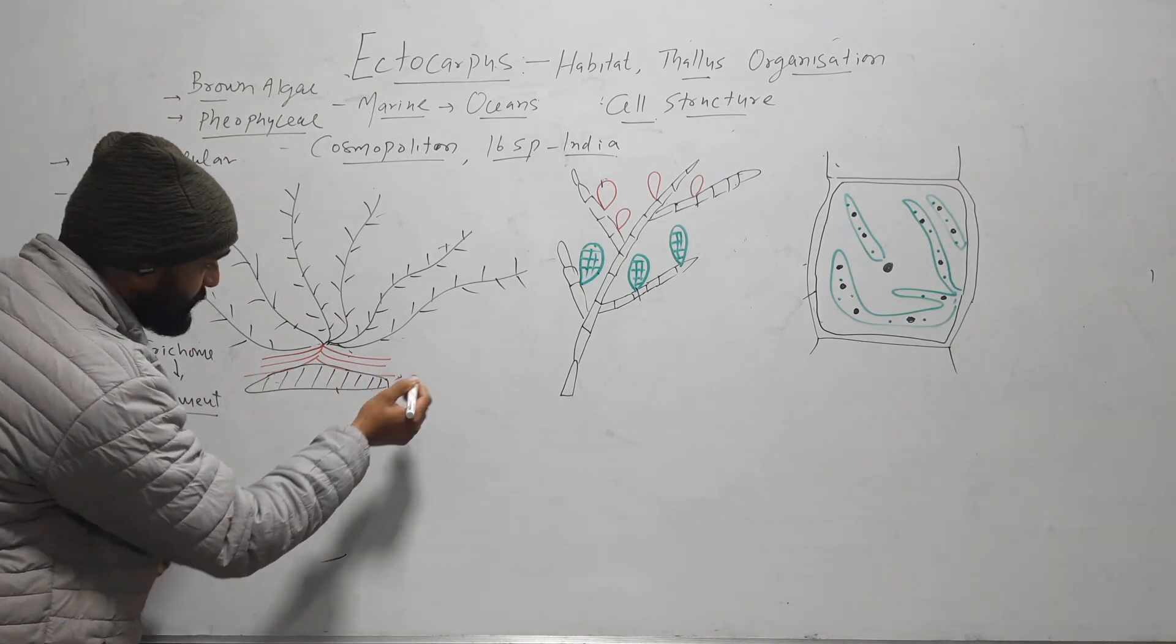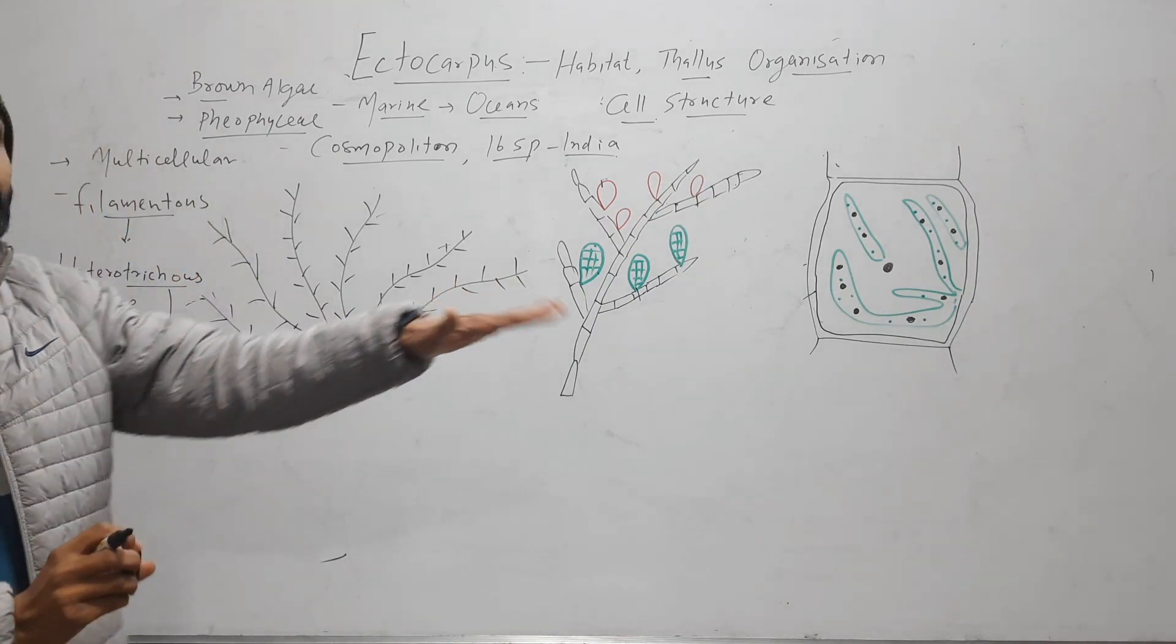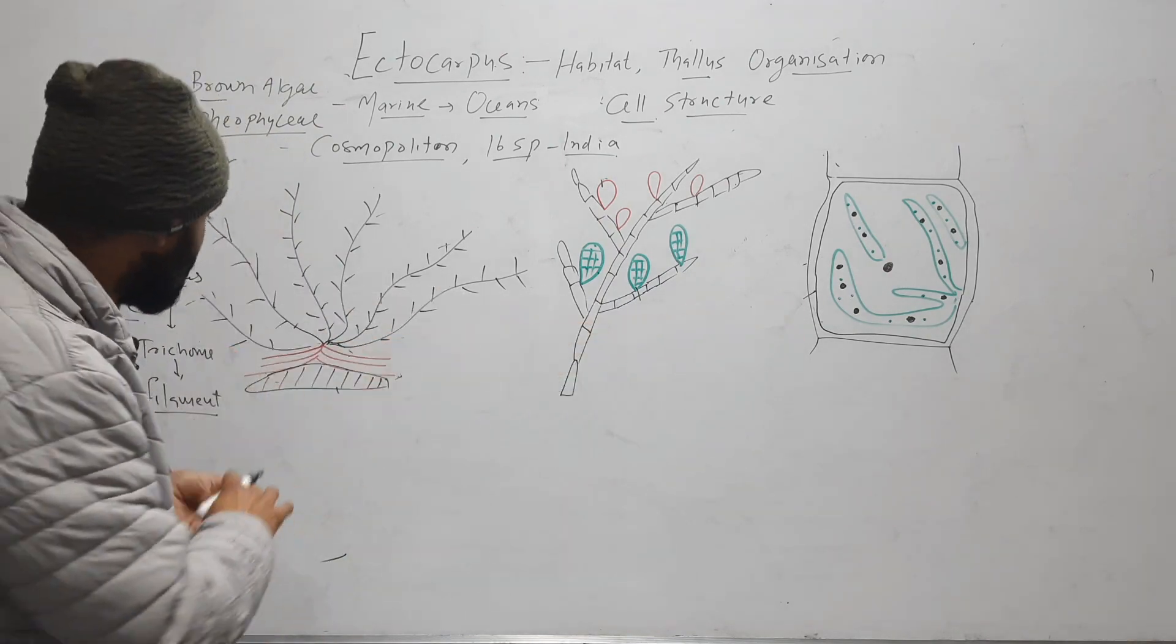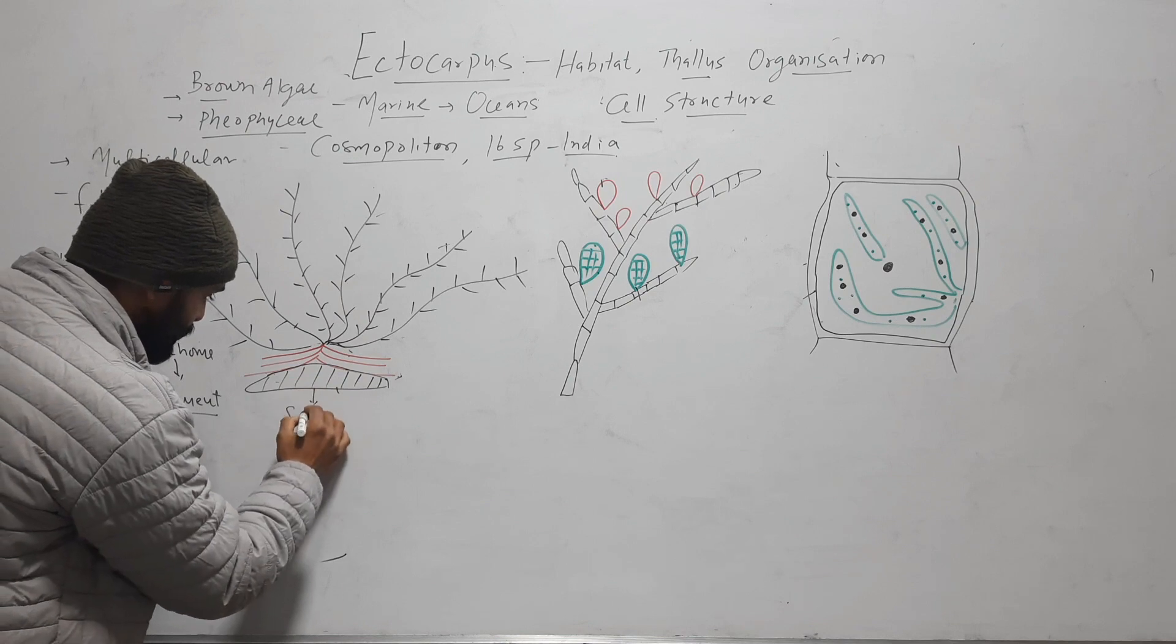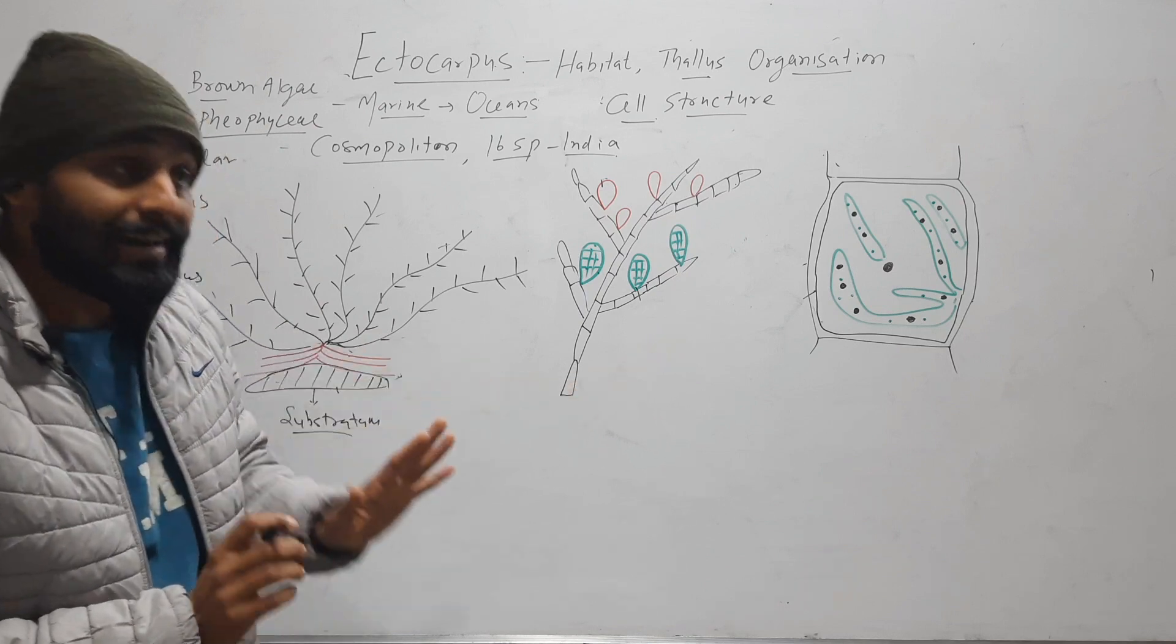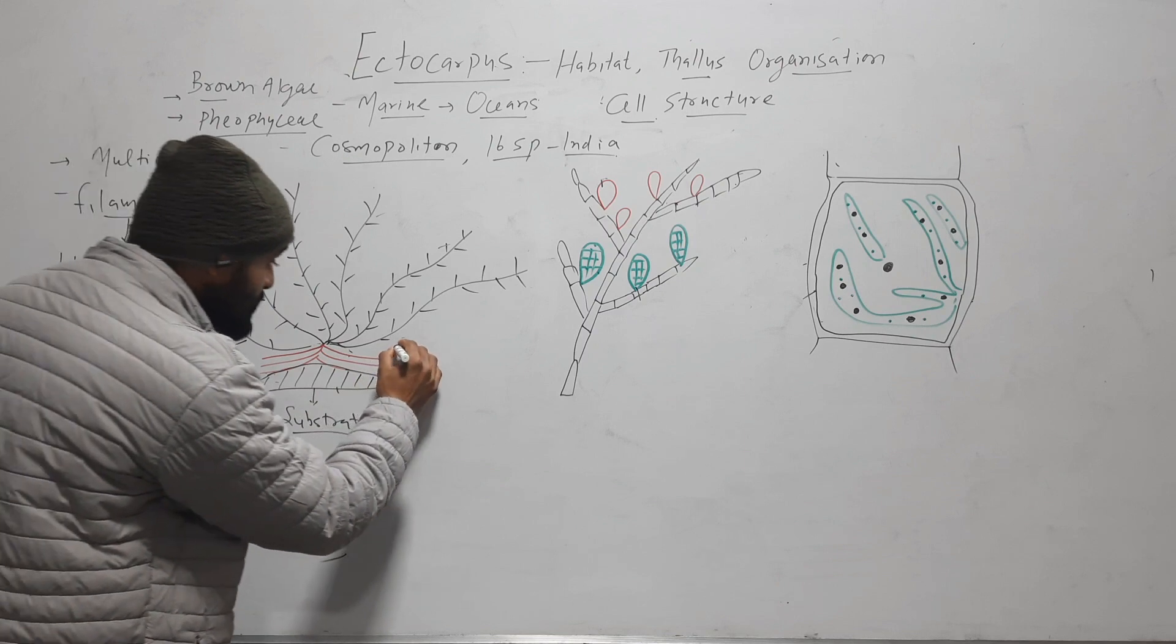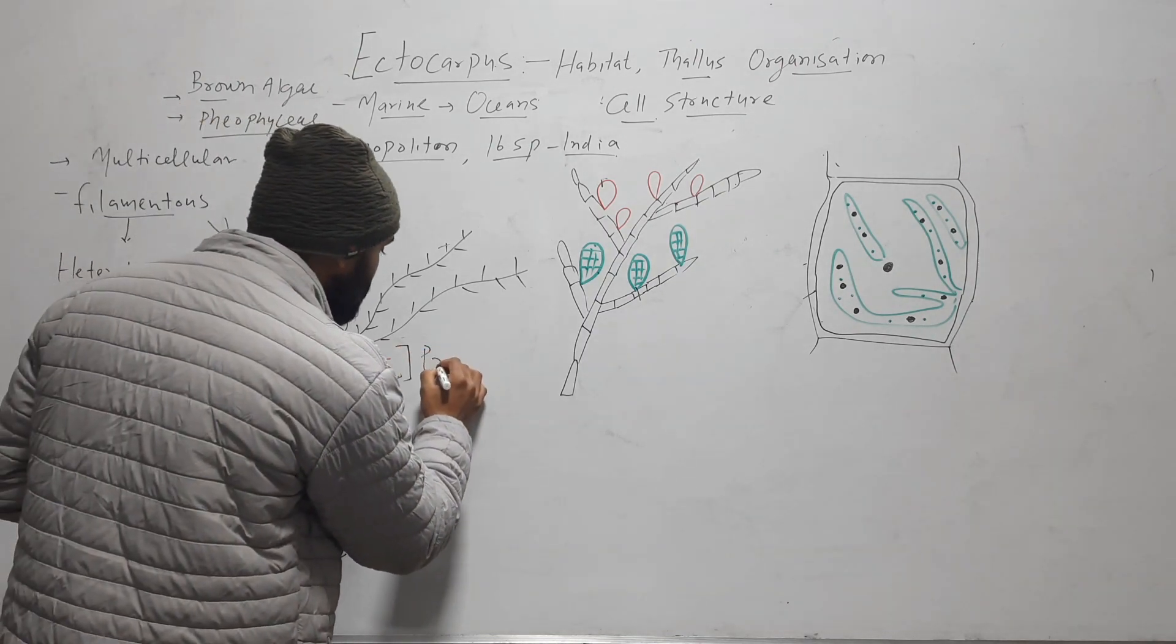One filament, that are here red in color, they creep over the substratum or the surface. So they are present parallel to the surface. Suppose this is substratum. They creep over the substratum, present parallel on the substratum and they are attached to that substratum. So these parallel present filaments are called prostrate filament.